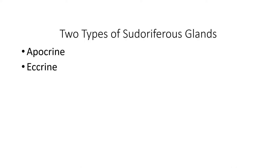In summary, we have two types of sweat glands: apocrine sweat glands, which are always associated with a hair, and eccrine sweat glands, which are not associated with hairs. Take a moment to jot these two terms down under letter C on page 57.